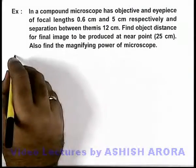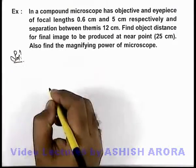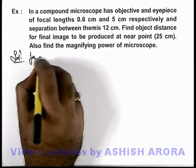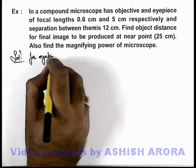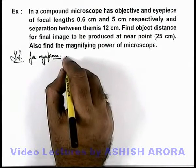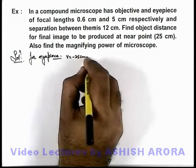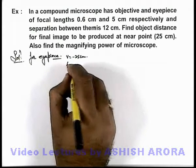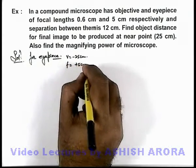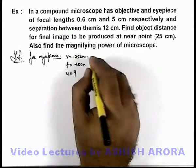We are also required to find the magnifying power of the microscope. If we analyze the situation first for the eyepiece lens, then for the eyepiece we can write that the final image is produced at minus 25 centimeters, and its focal length is plus 5 centimeters. So first we'll calculate the value of u for this eyepiece.